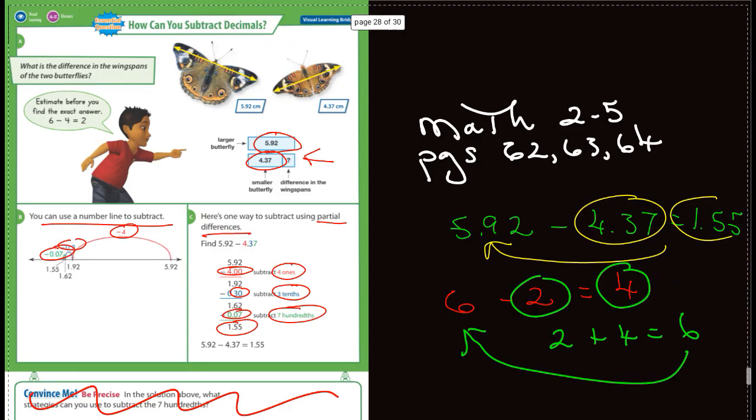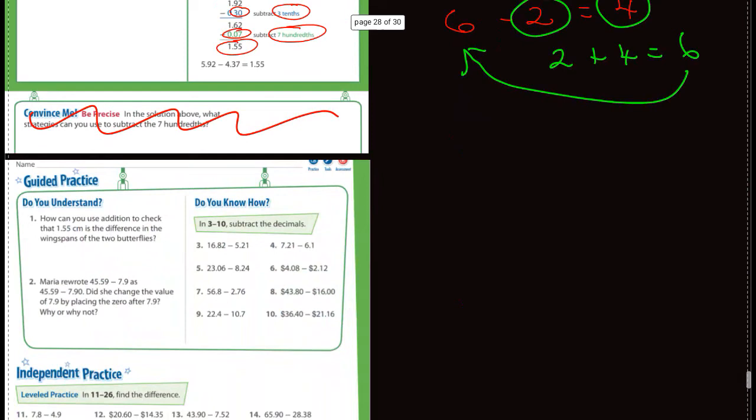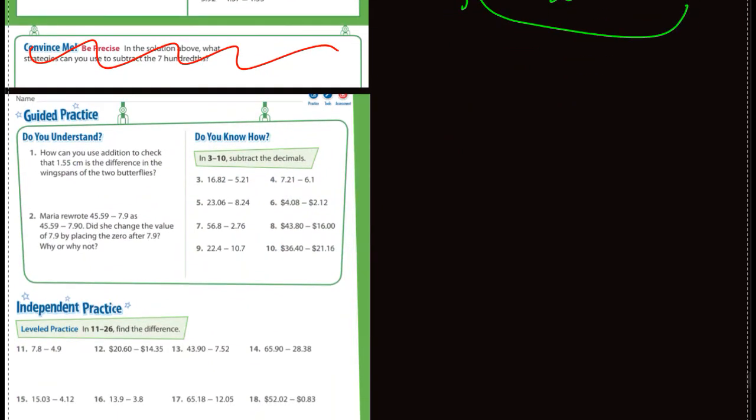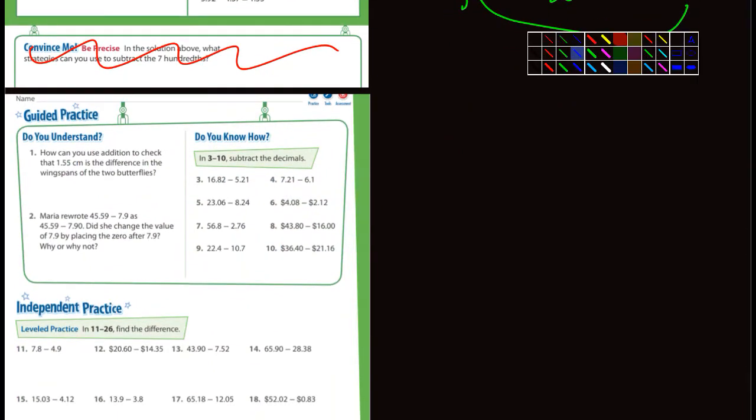5.92 minus 4.37, so you would add 4.37 plus 1.55, and you should get 5.92.